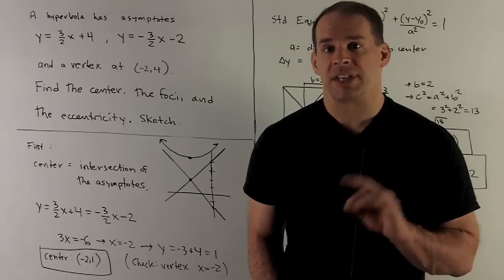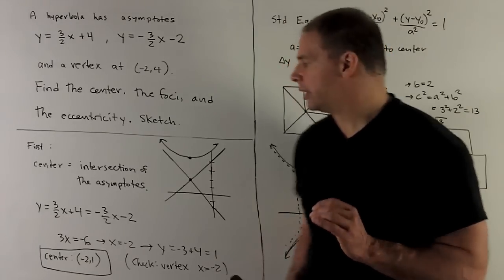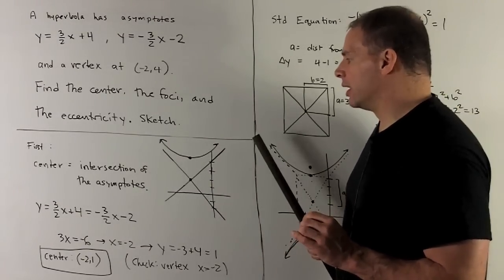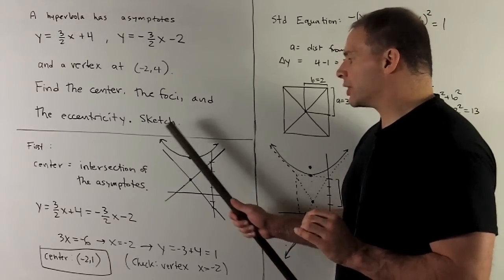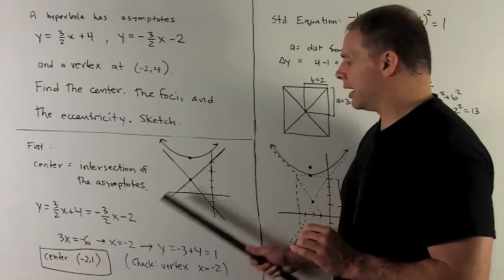First, let's sketch what we're given just to get an idea of what our hyperbola looks like. Draw on the asymptotes, two straight lines, and then we're going to have a vertex at this point right here. So that's going to mean the branches of my hyperbola are going to face up and then face down.